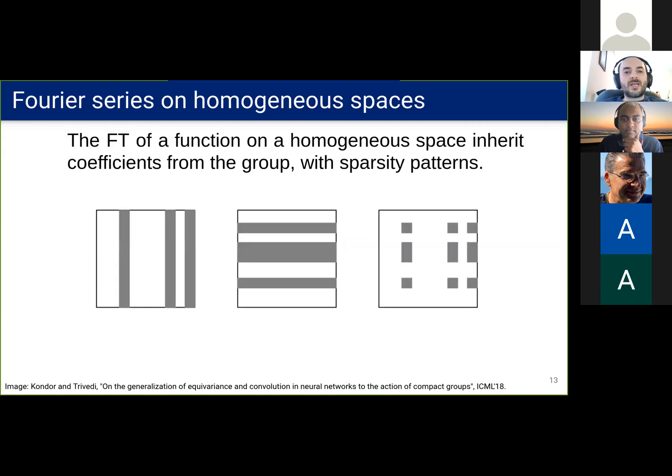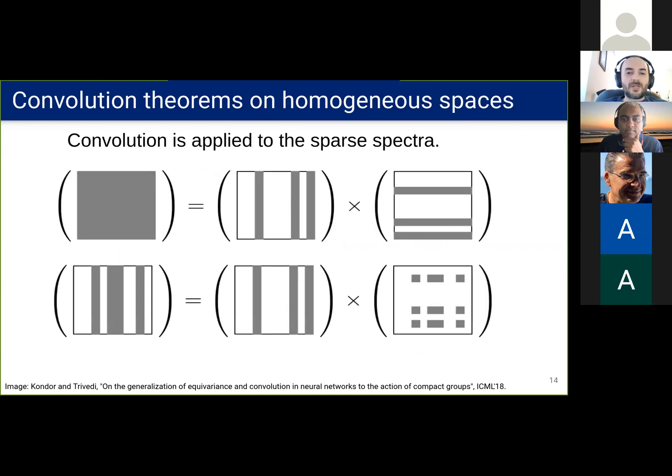And it turns out that the Fourier analysis on groups extends to homogeneous spaces. The coefficients are matrices with the same dimensions, but with some sparsity patterns. And we can apply the convolution theorem in the same way. Note that the output may be a function on the group or on another homogeneous space.